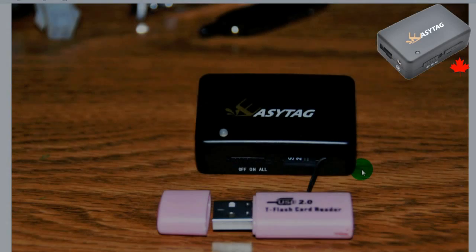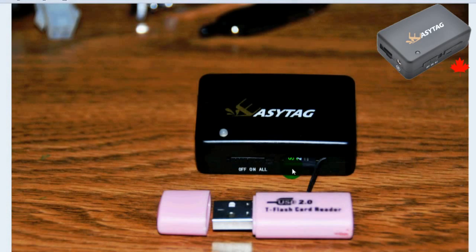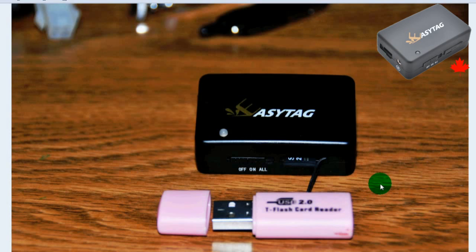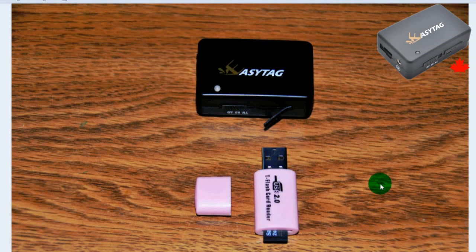To convert a GPS track into KML format, which can be used with Google Earth and Google Maps, start by taking the memory card out of the EZ tag and using the memory card reader to access the files.